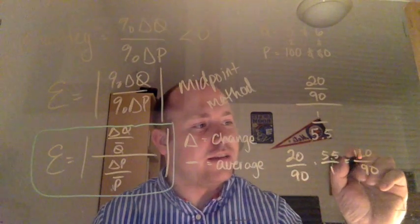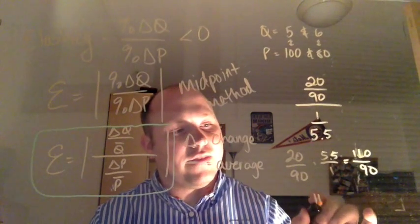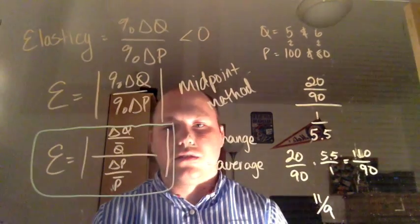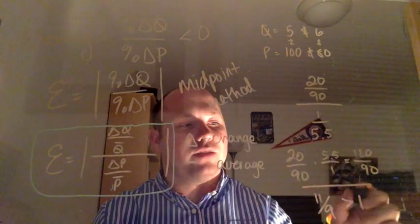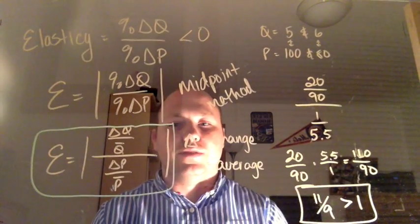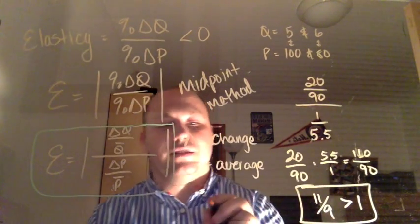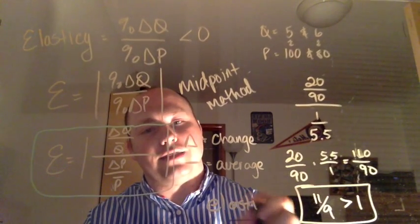We get 110 over 90, so that's 11 ninths, right? And 11 ninths is greater than 1, right? That's where we're going to stop in terms of the math, because what this tells us is that that is elastic.